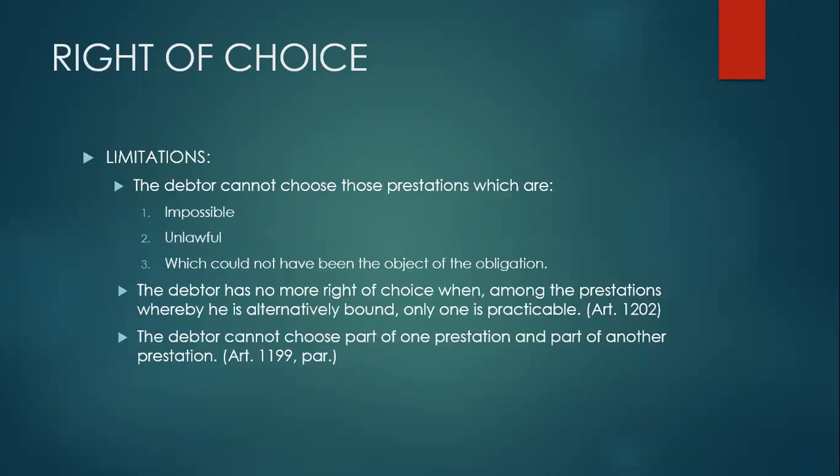And the debtor cannot choose part of one prestation and part of another prestation. In the same example, the debtor cannot choose part of the horse and part of the carabao as the fulfillment of her obligation, because that is what is provided for under the law — that the debtor cannot choose part of one prestation and part of another prestation.